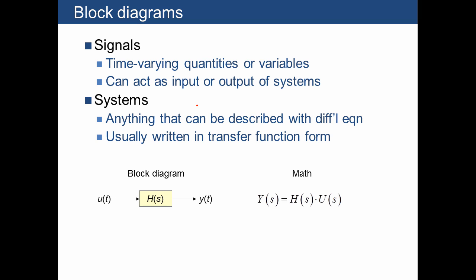The way to read one of these block diagrams is we have signals and systems. Signals are generally going to be entering into a system through an arrow and exiting through an arrow, and then the transfer function itself is going to be put into a box. And the way to read this is that Y of S, the output, is going to be equal to H of S times U of S, where U is the input.